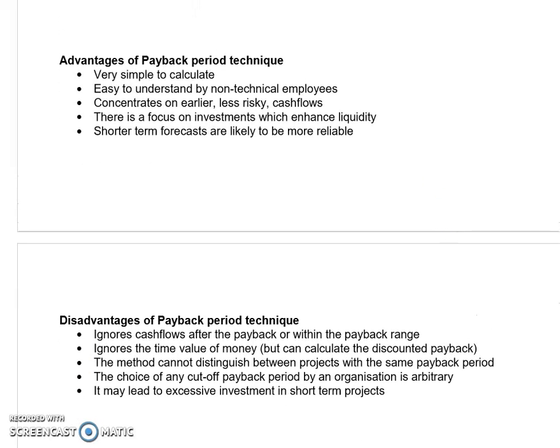The other thing you need to know is that if you have a number of projects and all those projects have the same payback period, how do you work out which one to take? In practice, what normally happens is the payback period is part of the armory of financial analysis — it is one tool. Most organizations would do the payback period plus another tool, or maybe three tools, such as accounting rate of return and a discounted cash flow technique, and then come to their decision about whether or not to go ahead with the project.